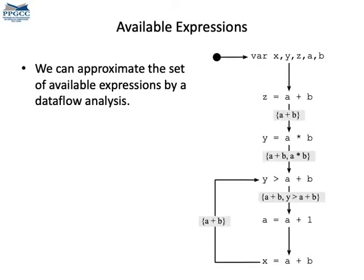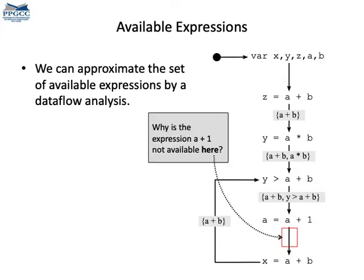We can use a data flow analysis to estimate the available expressions at any program point. I'm showing on the gray boxes the expressions that are available at the different program points of our example. So, can you try to imagine why this expression A plus B is not available at this point with the red box?